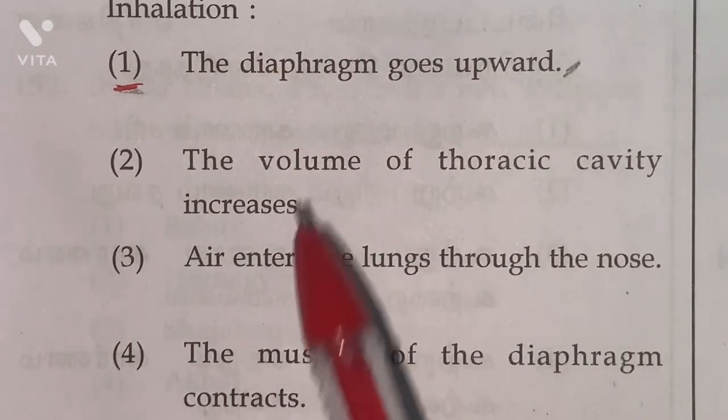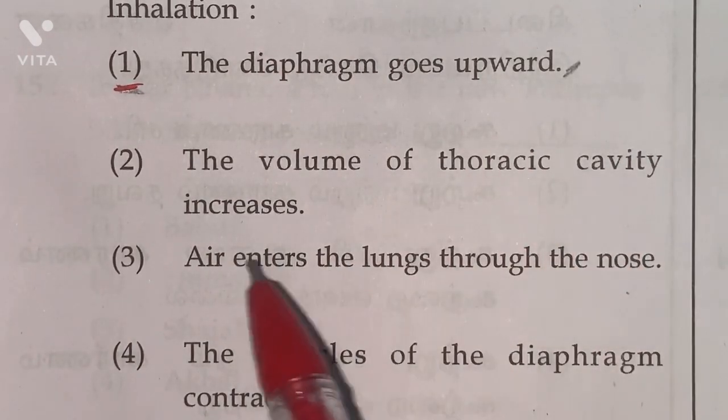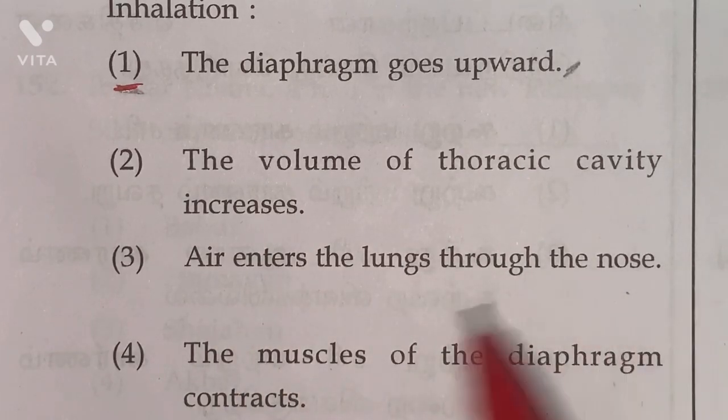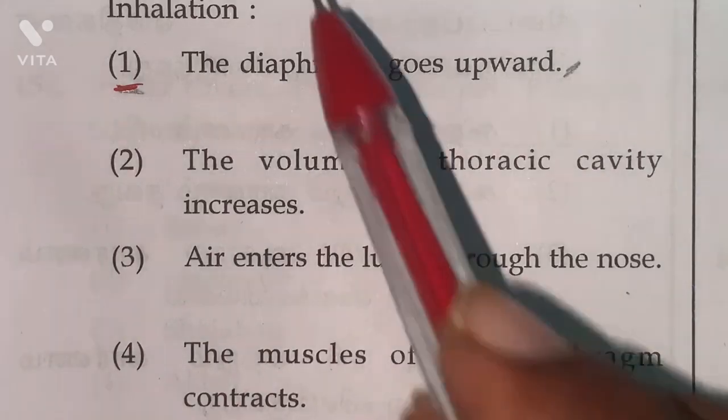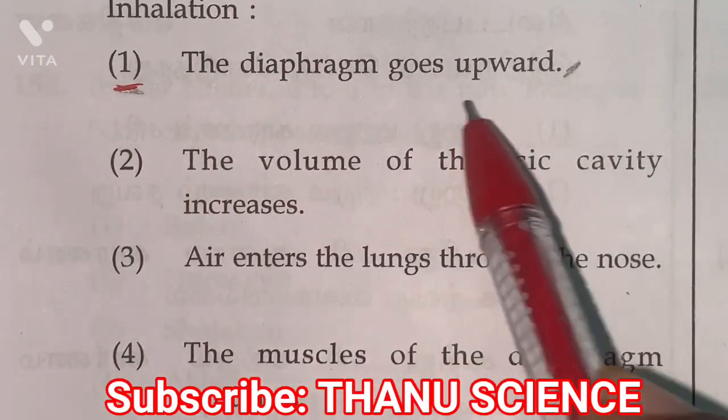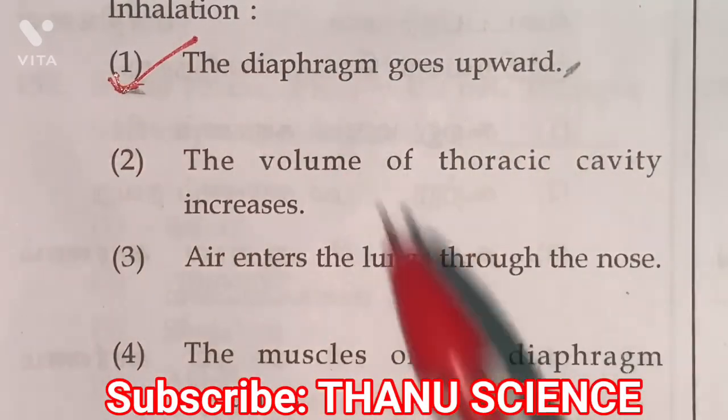These are all correct. Volume of thoracic cavity increases, air enters the lungs through the nose, the muscles of the diaphragm contract. These are all correct. So incorrect statement is first one. The diaphragm goes upward. So option 1 is the right answer.